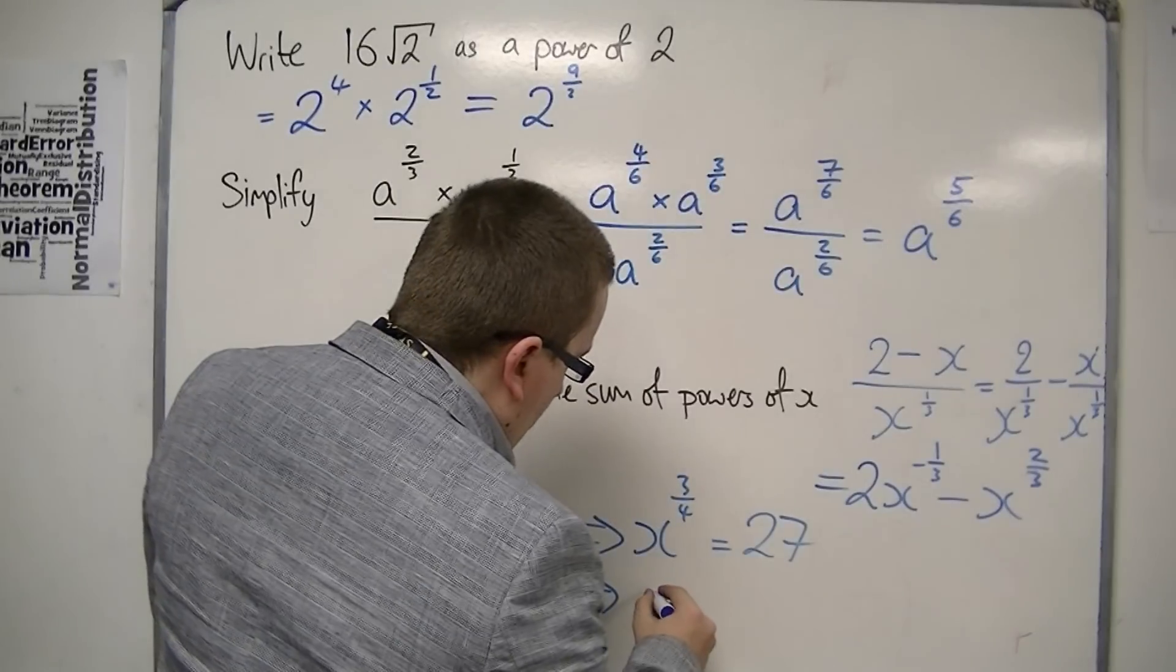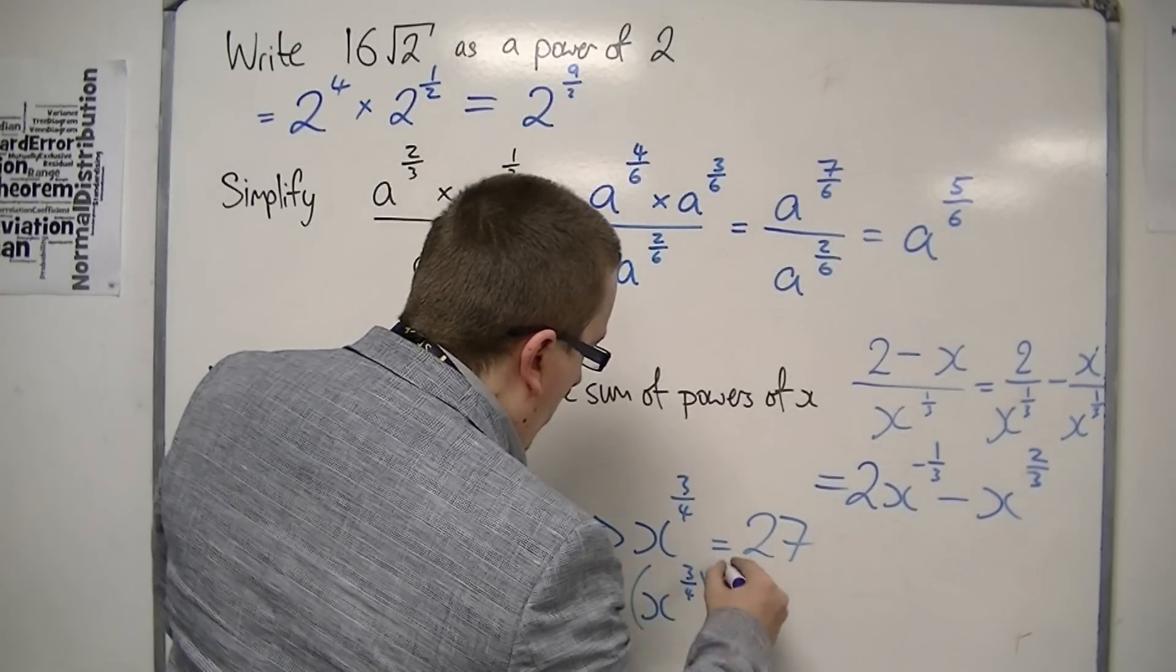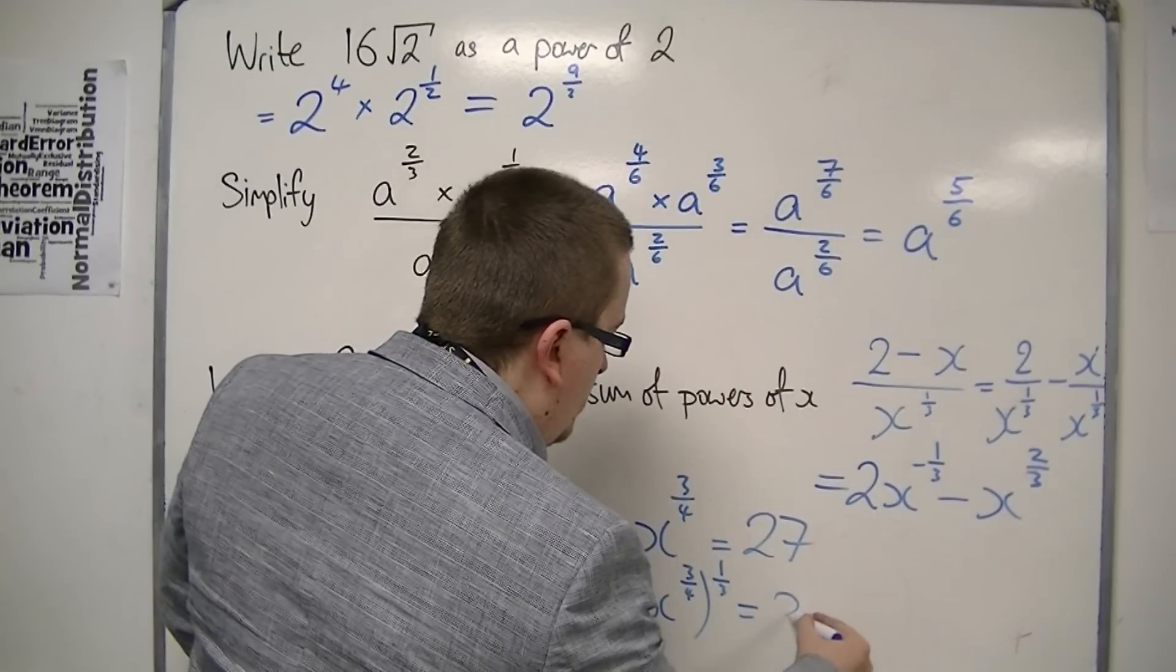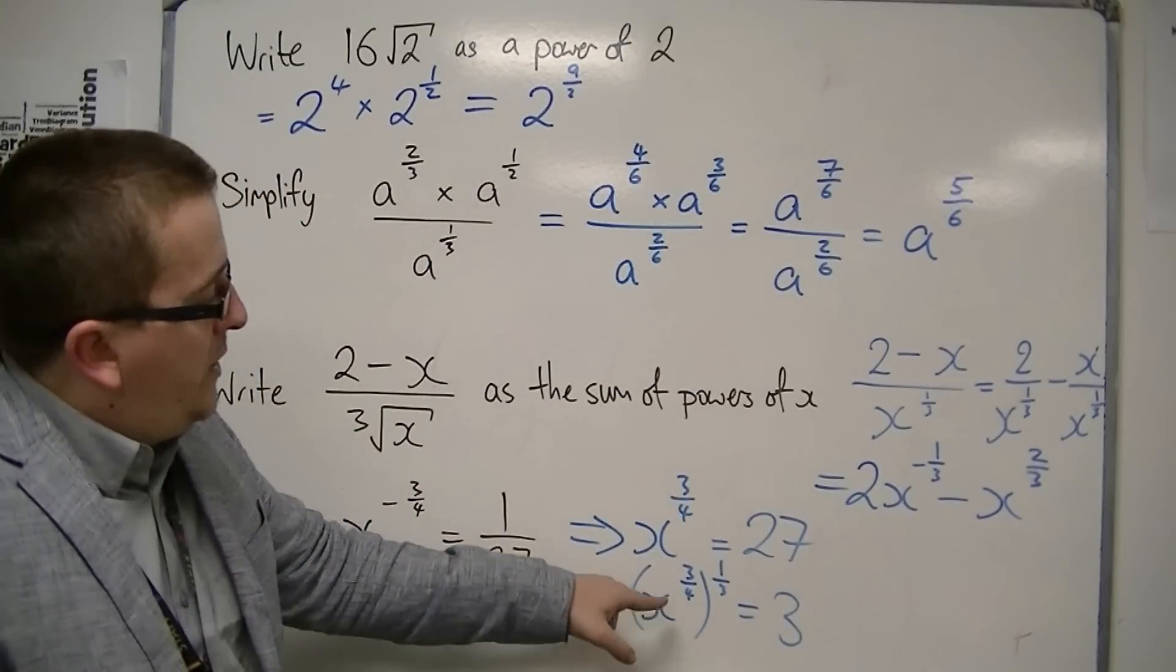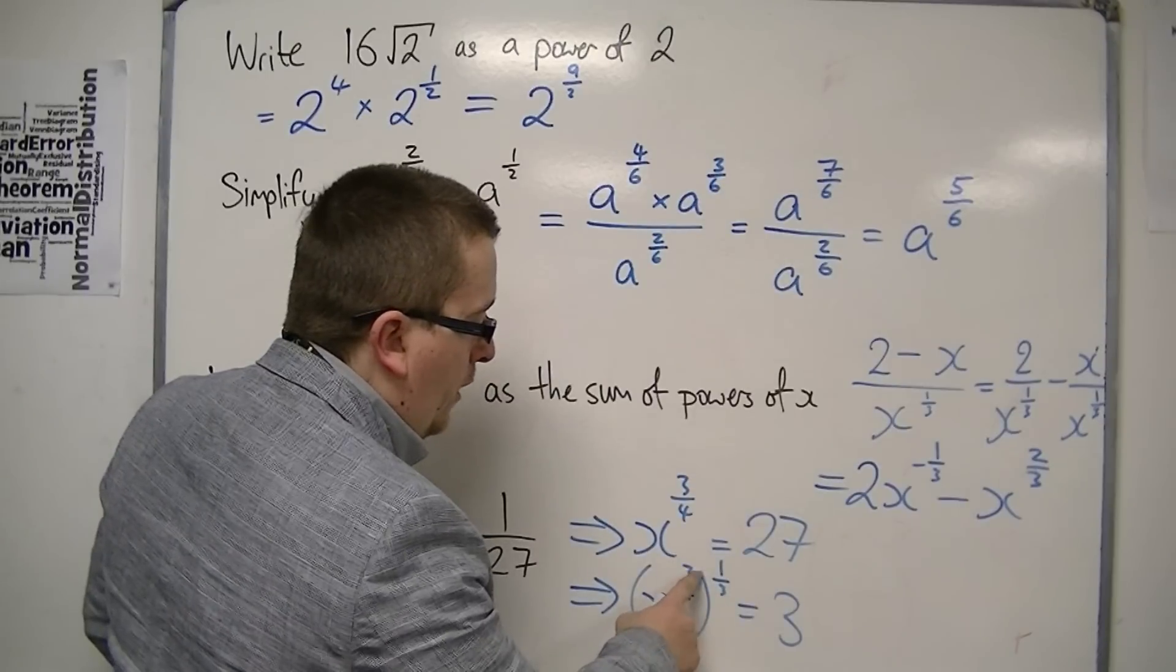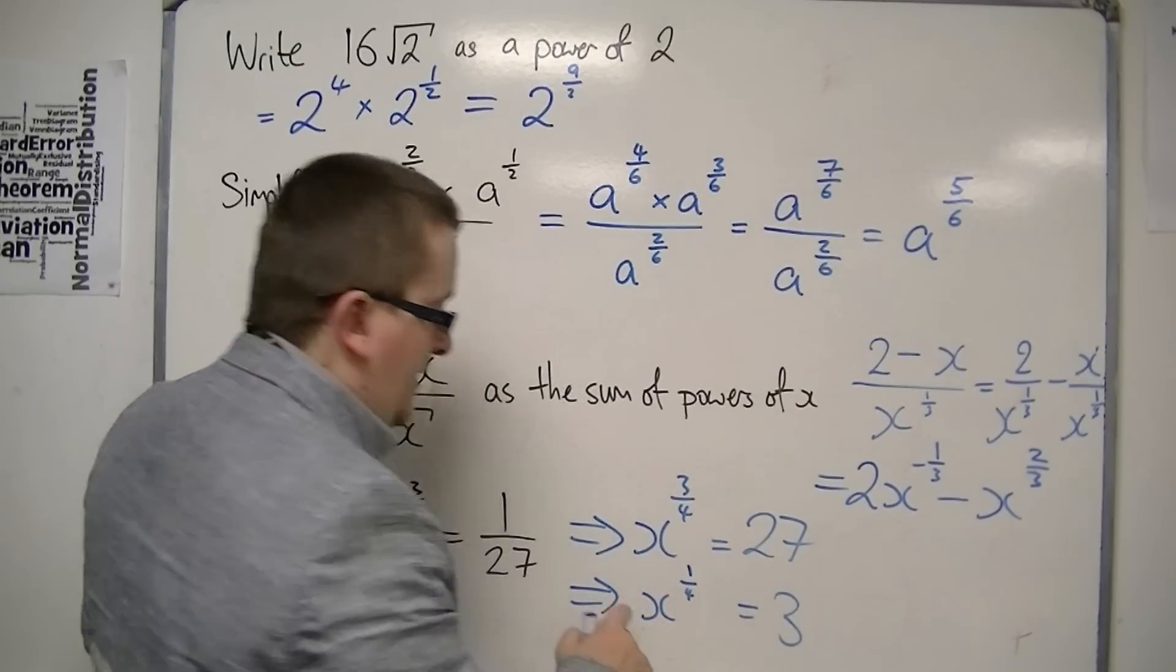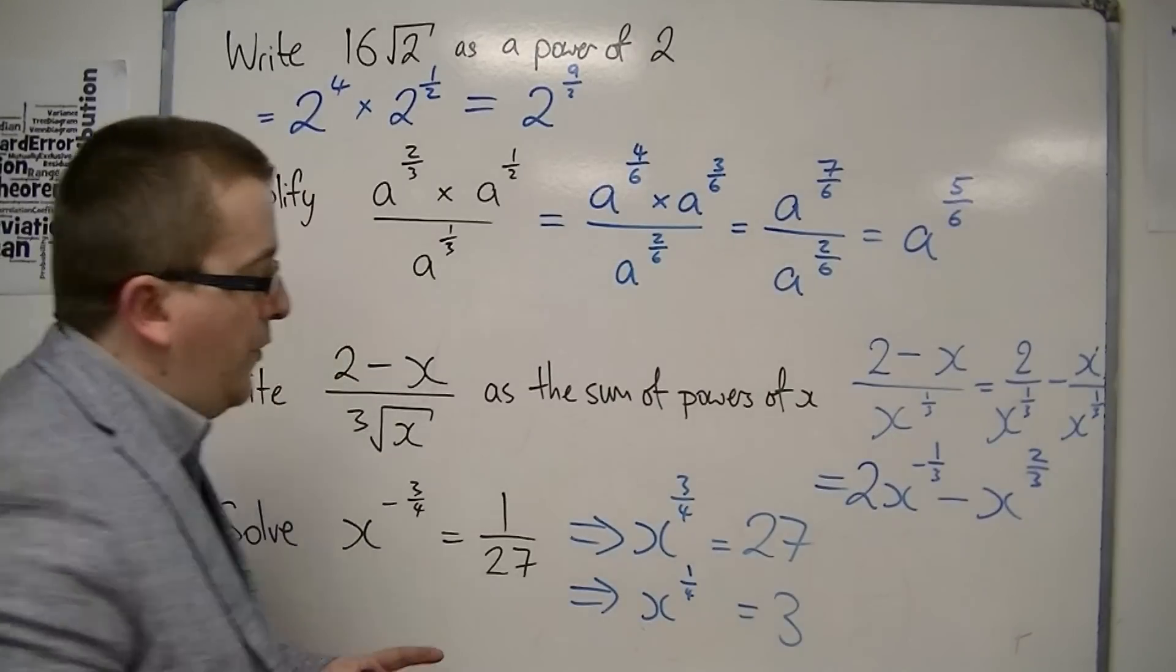Now, if I cube root both sides, then this is effectively getting me x to the 3/4 to the 1/3 is equal to the cube root of 27, which is 3. And the reason why I've cube rooted both sides is because that eliminates the 3. Because we have 3/4 times 1/3, which is just 1 over 4. In actual fact, I can go directly to that step. Cube root both sides gets rid of the 3.